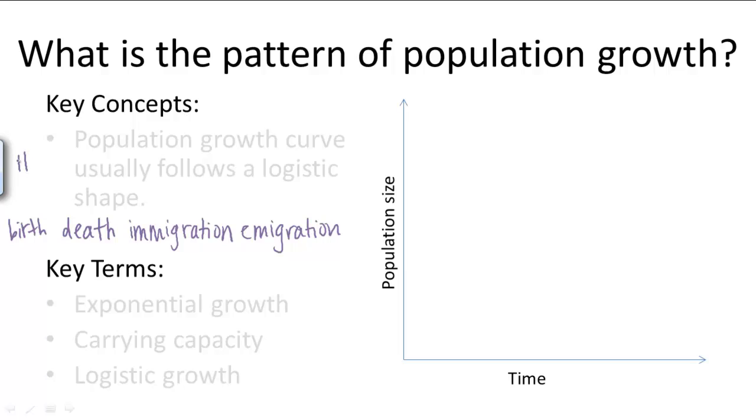in population size, we're dealing with the number of births, deaths, and the amount of immigration and emigration, whereas in population growth we deal with the rate of birth, death, immigration, and emigration.